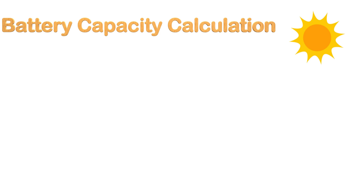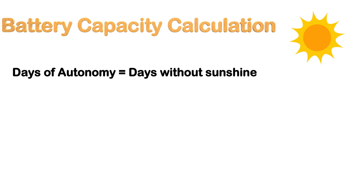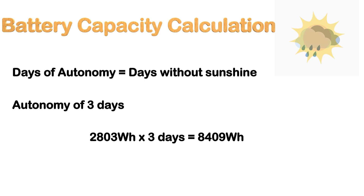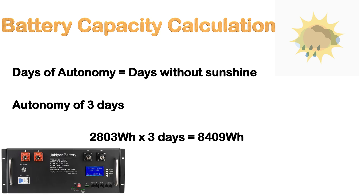In step two, we must decide how many days of autonomy we want. A good measure is about three days, so you can still power your loads when the sun is not shining or it's raining. Remember, the more autonomous days you have, the more batteries you will need. We totaled our loads at 2,803 watt-hours per day, so multiplying by three days gives us 8,409 watt-hours.